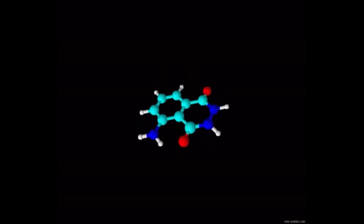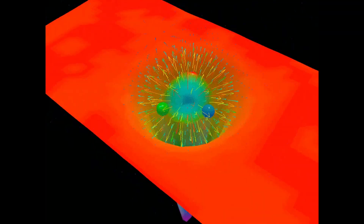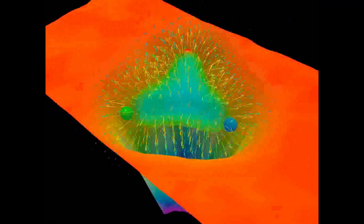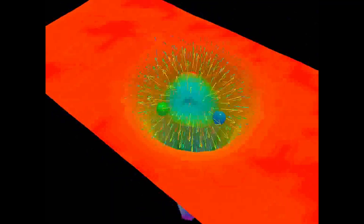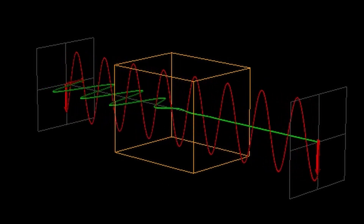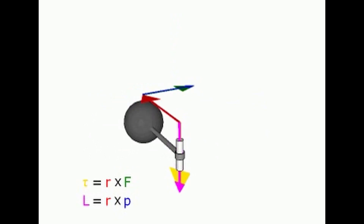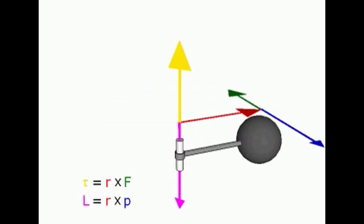At absolute zero there is only one possible microstate — the most ordered state — leading to zero entropy. However, real substances often have some residual entropy even at absolute zero due to imperfections or disorder in their structure, arising from the presence of multiple microstates the system can occupy even at very low temperatures.